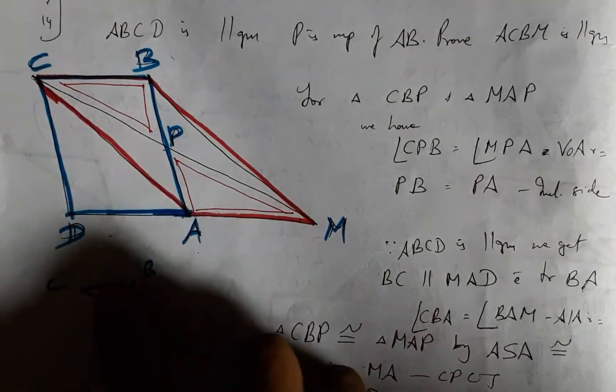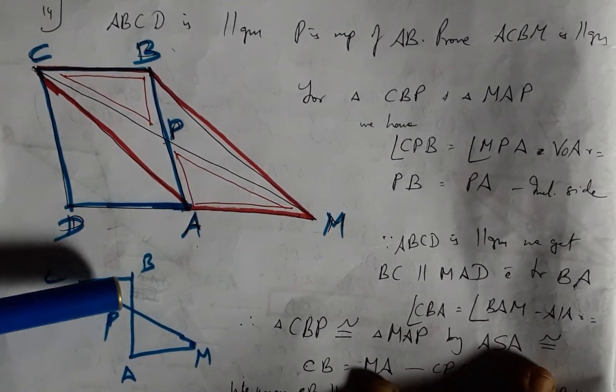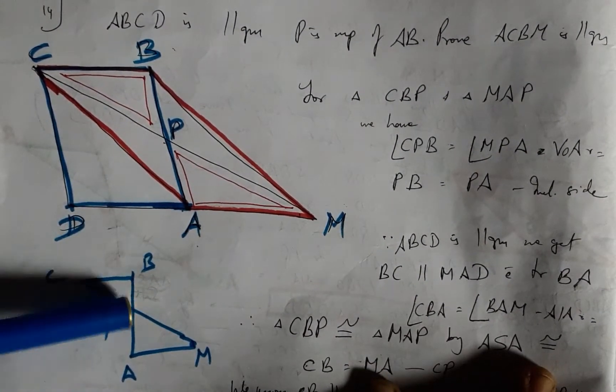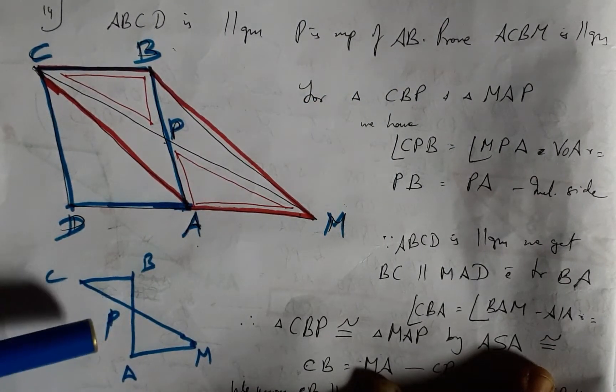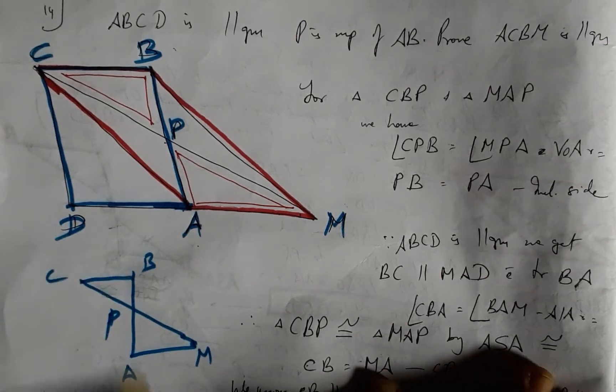Now for these two triangles we have BP equals AP because P is the midpoint of AB. And also this angle equals this angle, vertically opposite angles are equal.